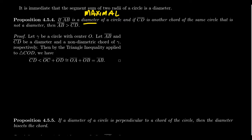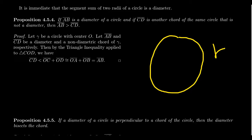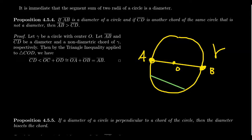All diameters of the same circle are congruent to each other. For the proof, we have circle gamma with center O. Consider the diameter AB, which passes through O, and some non-diametric chord CD. The fact that AB is a diameter means the center O lies on that chord.